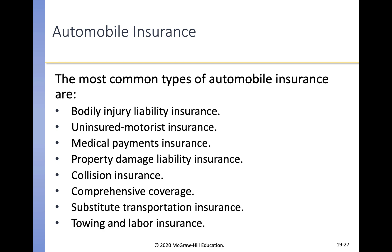Moving on to automobile insurance. The most common types are bodily injury liability, uninsured motorist, medical payments, property damage liability, collision insurance, comprehensive coverage, substitute transportation insurance, and towing and labor insurance. Automobile insurance generally provides indemnity against losses from fire, theft, or collision with another vehicle, and damages arising from injury by motor vehicles to persons or property. The law for determining fault in accidents and required insurance coverage varies greatly from state to state.